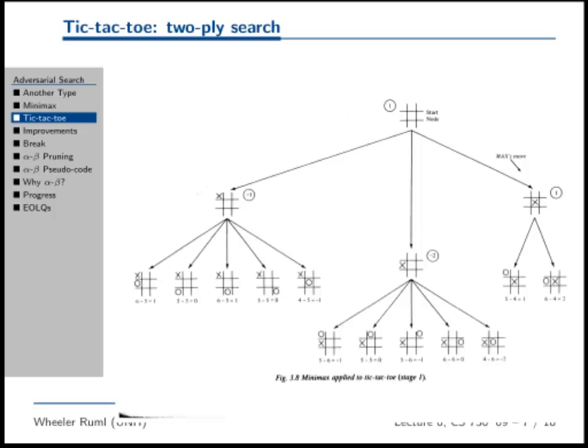Now O is going to move and we do that for each board here and you get 1, 0, 1, 0, negative 1. So O is trying to go here. O is min. So obviously O is going to go to the negative 1. So the minimax value for this node is negative 1. You do that same thing for each of these other moves and you end up with minimax values of negative 1, negative 2, and 1. So where does max go? It goes to the 1.